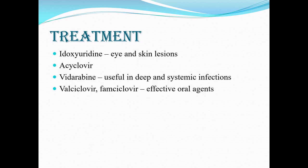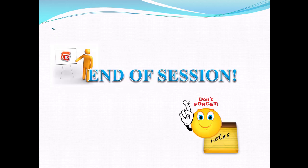For treatment, if the patient has eye and skin lesions, you can use idoxuridine or acyclovir. Vidarabine is used for deep and systemic infections, and valacyclovir and famciclovir are good as oral agents. This has been a brief introduction to herpes viruses, just for understanding what a herpes virus is. I hope you have understood, and if there are any comments, please let me know. Thank you.